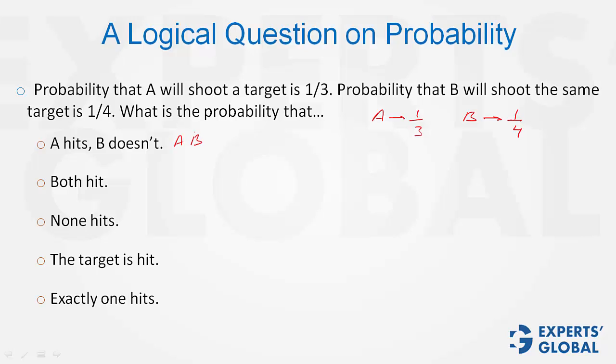A hits, B doesn't, so 1 by 3. Probability of B hitting is 1 by 4, so probability of B not hitting would be 1 minus 1 by 4, that is 3 by 4. The answer is 1 by 4.